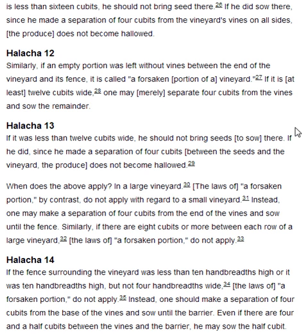Halakha 13. If it was less than twelve cubits wide, he should not bring seeds to sow there. If he did, since he made a separation of four cubits between the seeds and the vineyard, the produce does not become hallowed. When does the above apply? In a large vineyard. The laws of a forsaken portion, by contrast, do not apply with regard to a small vineyard. Instead, one may make a separation of four cubits from the end of the vines and sow until the fence. Similarly, if there are eight cubits or more between each row of a large vineyard, the laws of a forsaken portion do not apply.